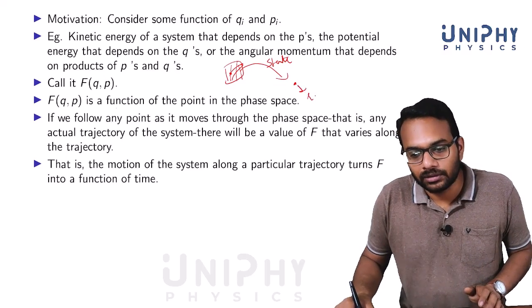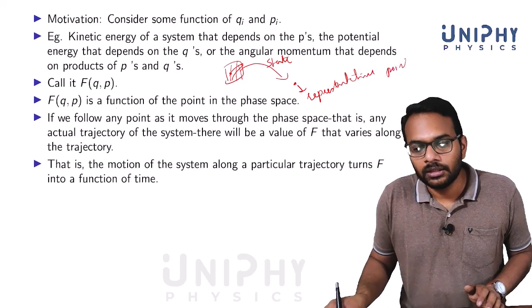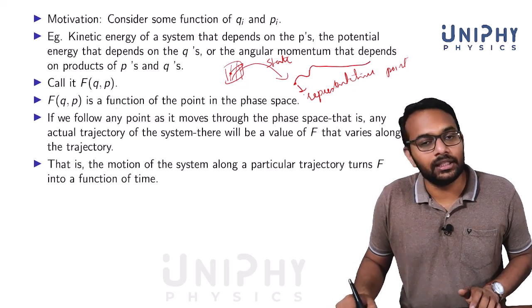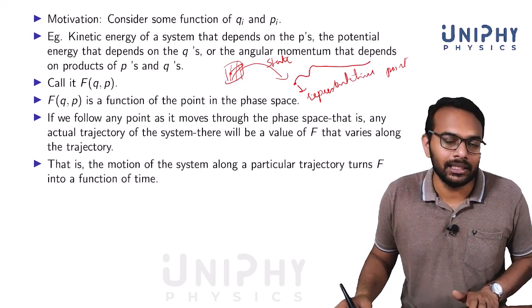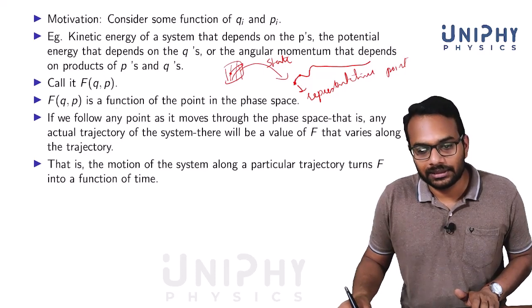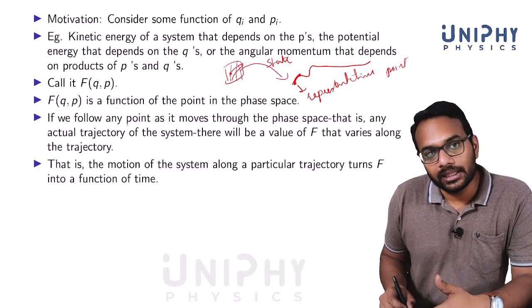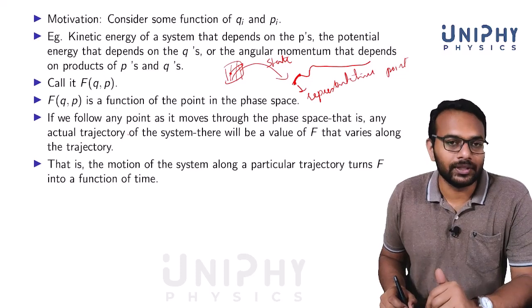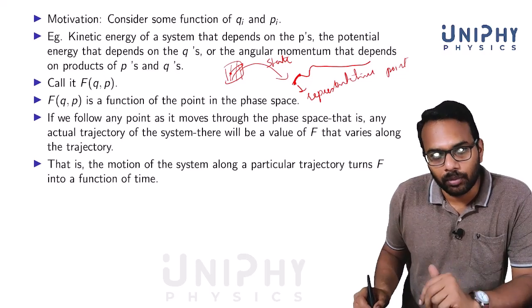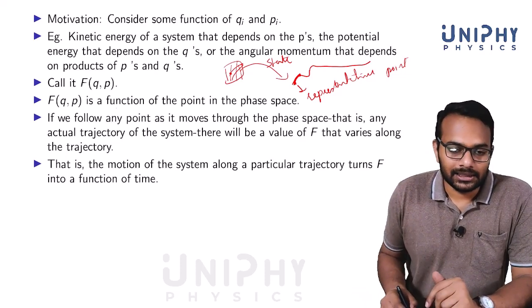As the physical system changes, what we call the representative point moves in phase space, or the representative point traces a trajectory in phase space. Initially this is the state, and after some time the state changes — so we say it traces a trajectory in phase space. As the representative point moves through phase space, it evolves with time.